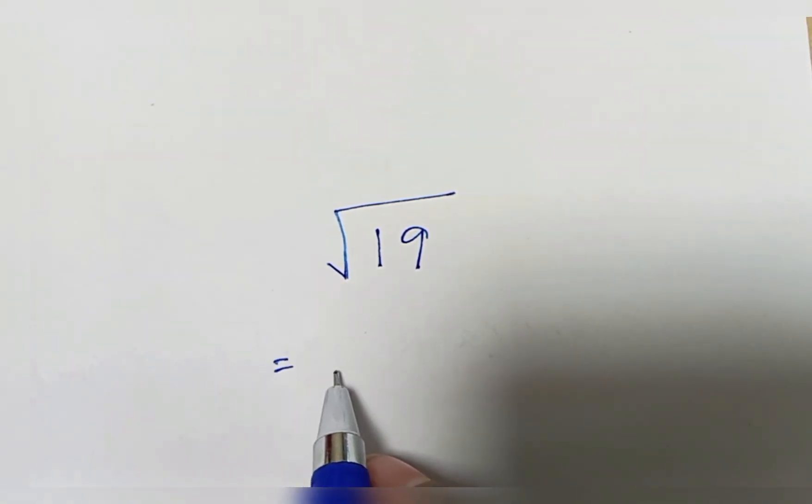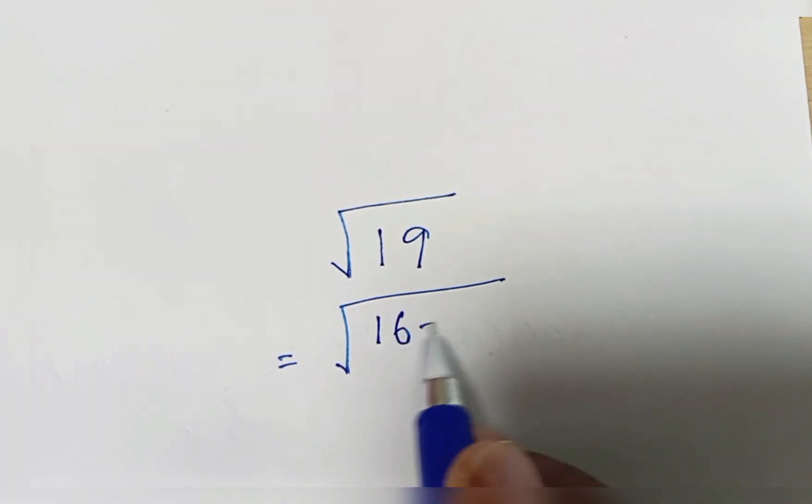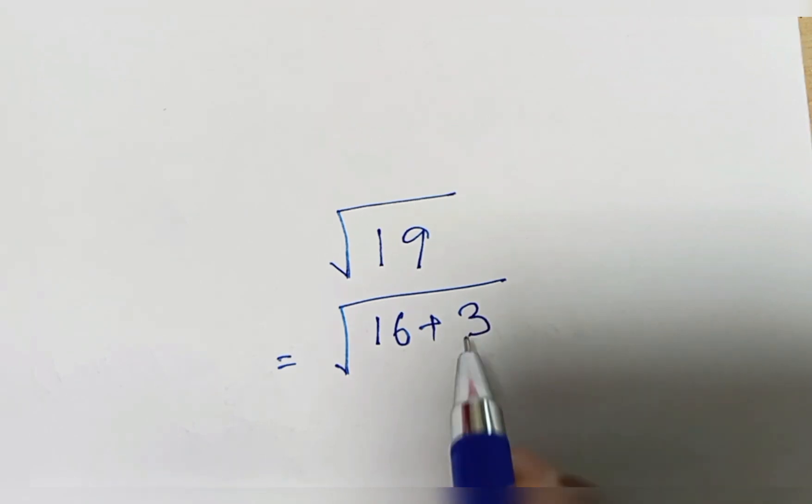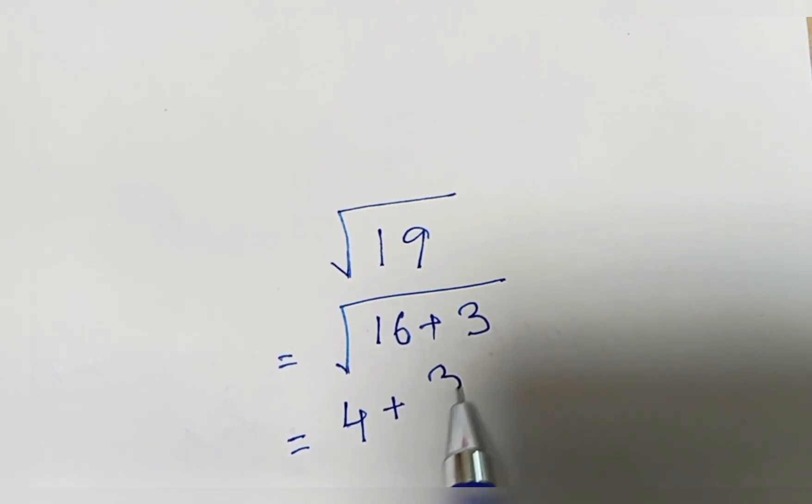Using this trick, you know the square of 4 is 16, so we can write 16 plus 3 equals 19. Since 16 equals 4 squared, what you have to do is take 3 divided by 2 times 4.